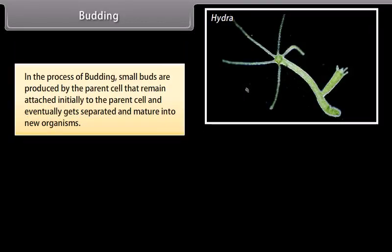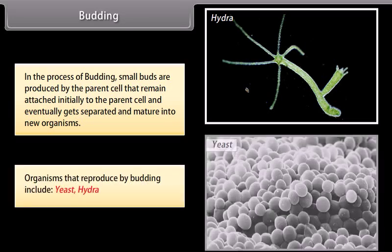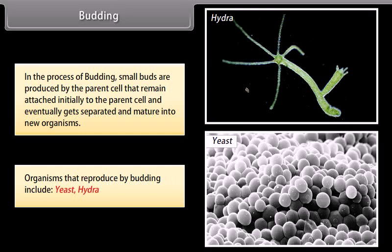Budding: In the process of budding, small buds are produced by the parent cell that remain attached initially to the parent cell and eventually get separated and mature into new organisms. Organisms that reproduce by budding include yeast and Hydra. The following diagram shows the bud developing on a parent Hydra.